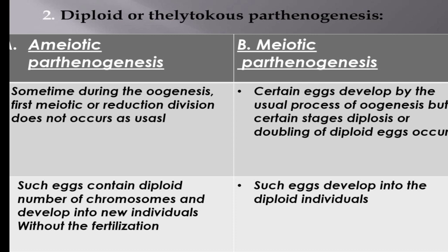Diploid or thelytoky parthenogenesis may be of two types: ameiotic parthenogenesis and meiotic parthenogenesis. In ameiotic parthenogenesis, during oogenesis, the first meiotic division does not occur but the second meiotic division occurs as usual. Such eggs contain the diploid number of chromosomes and develop into new individuals without fertilization. This is known as apomictic or ameiotic parthenogenesis and occurs in weevils and long-horned grasshoppers.